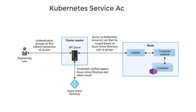The master node always hosts the API server, and that API server is responsible for hosting your service account as well. One of the primary authentication methods is a service account that is hosted and managed on the Kubernetes API server. The credentials for the service account are also stored on the API server in Kubernetes secrets, which allows the service accounts to be used by the pods and to communicate back and forth with the API server.